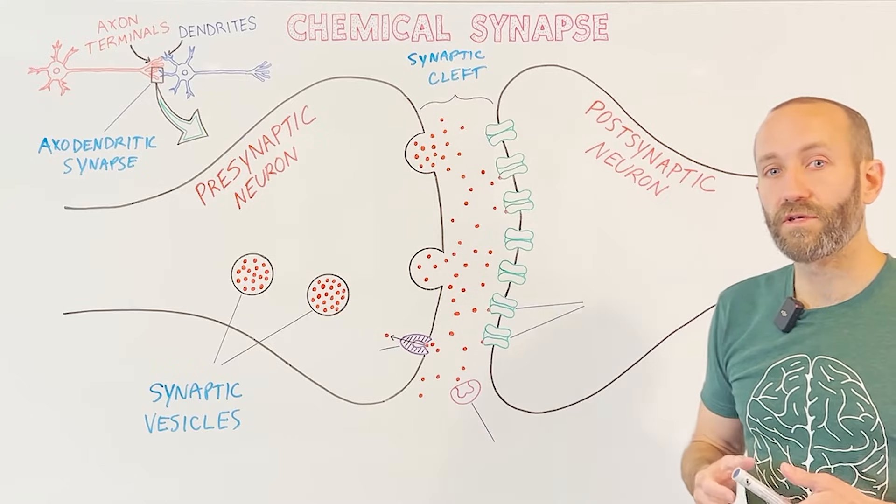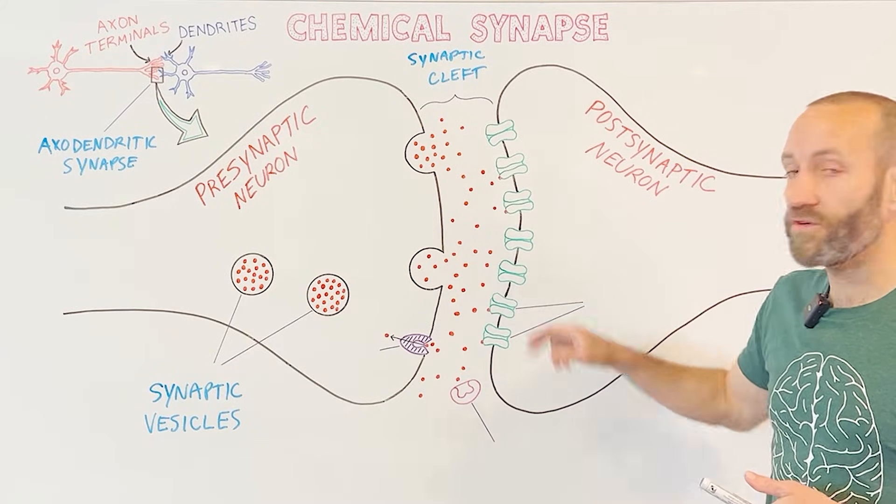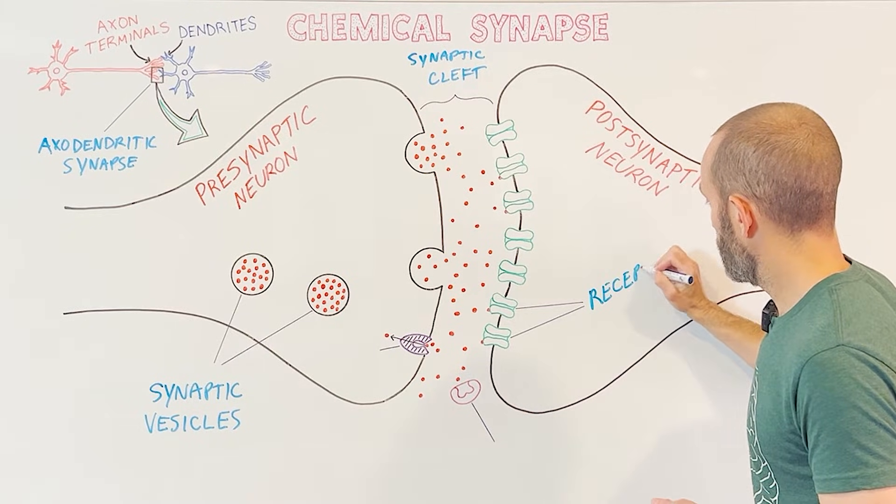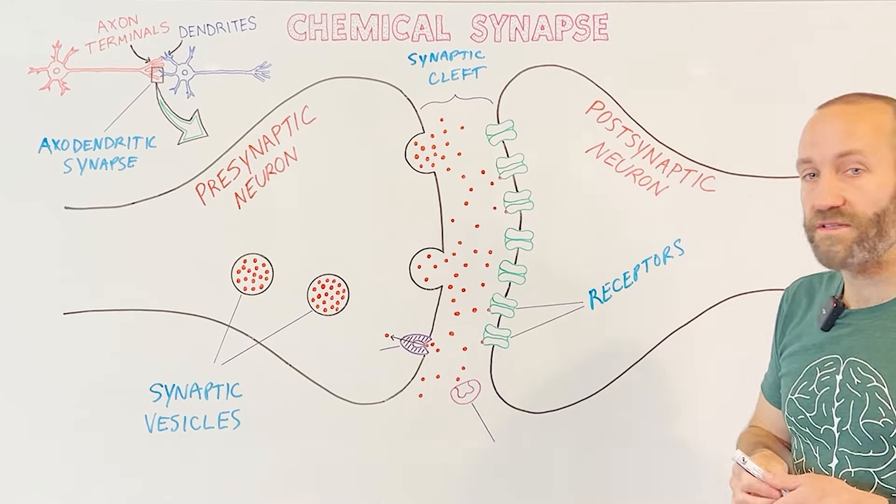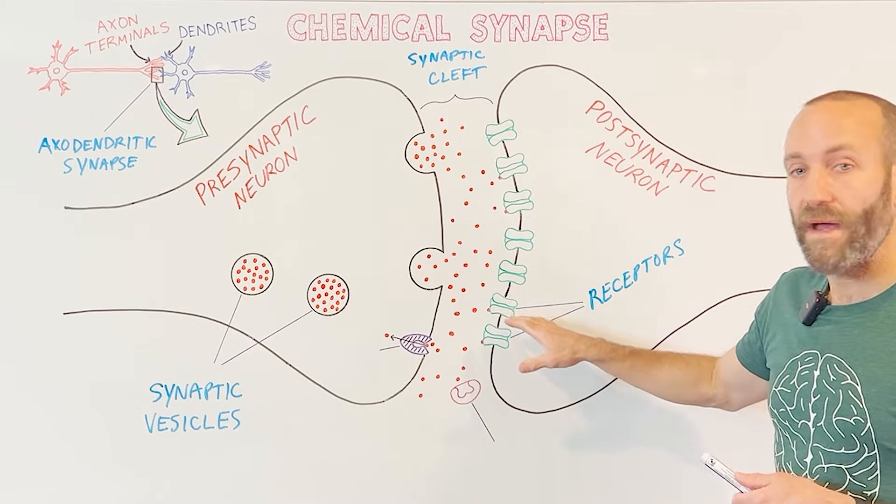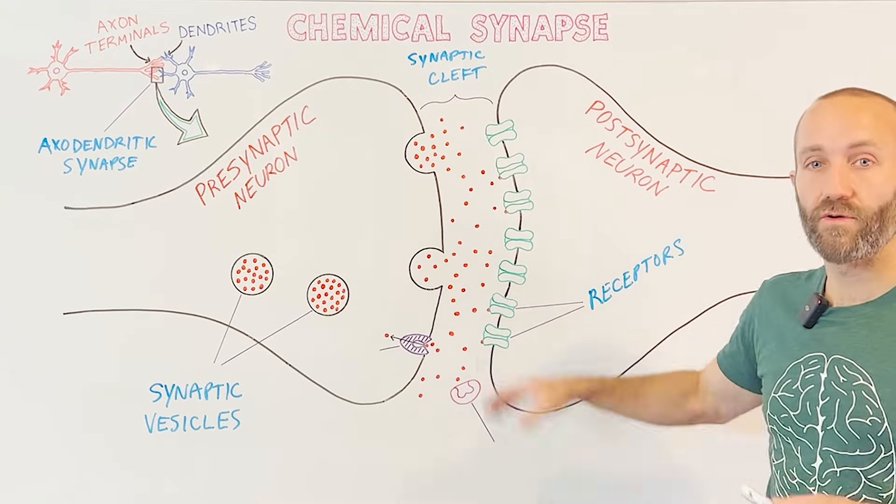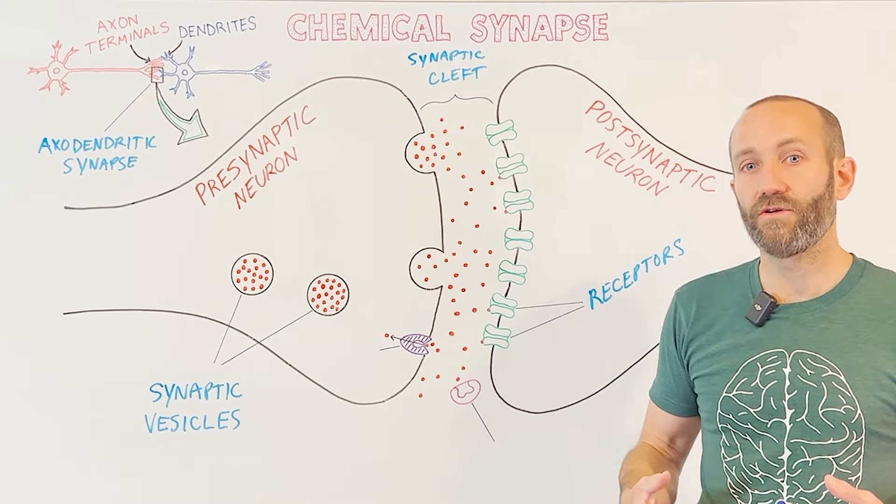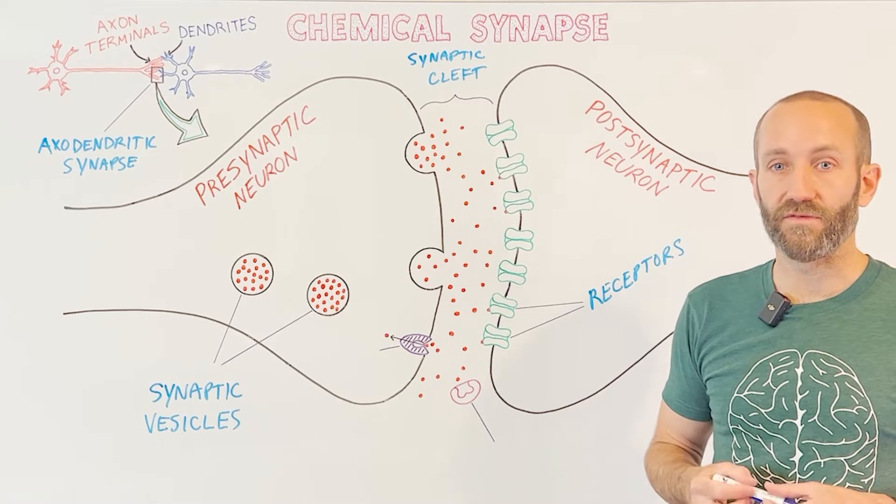Once the neurotransmitter molecules enter the synaptic cleft, they diffuse across the cleft and interact with proteins called receptors. These receptors are typically found embedded in the membrane of the postsynaptic neuron, and the neurotransmitter molecules can bind or attach to these receptors, and when they do, they prompt changes in the postsynaptic neuron that might make that neuron more or less likely to fire an action potential of its own.